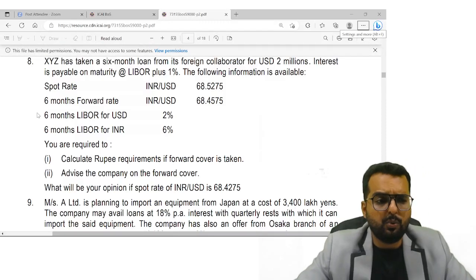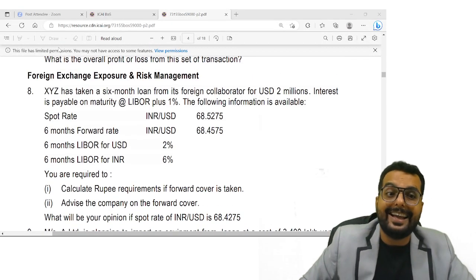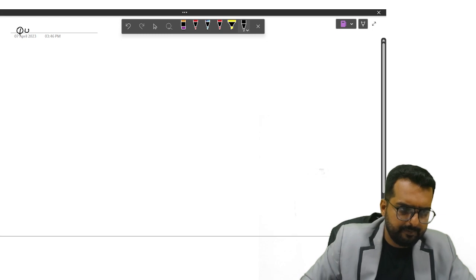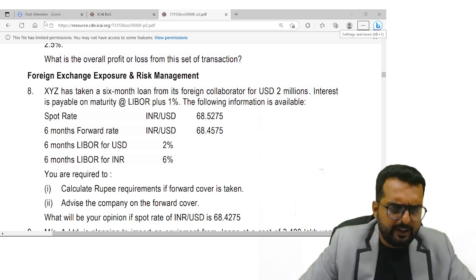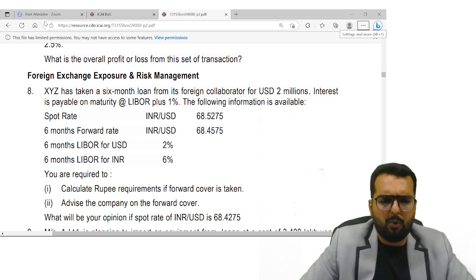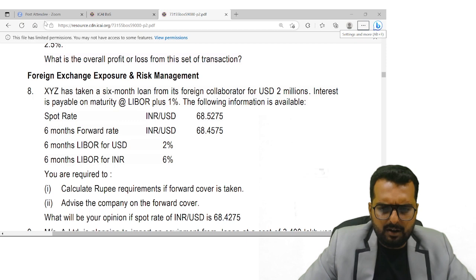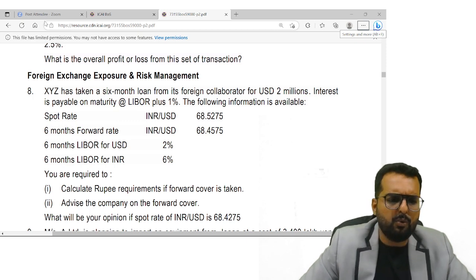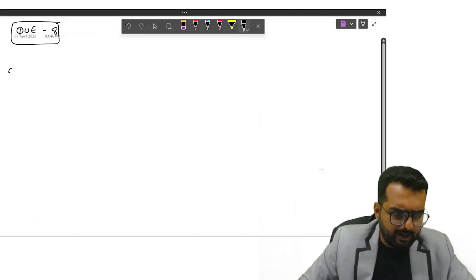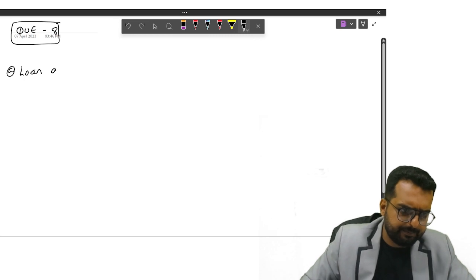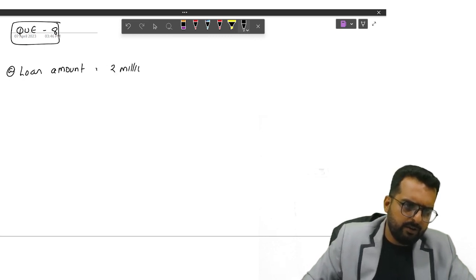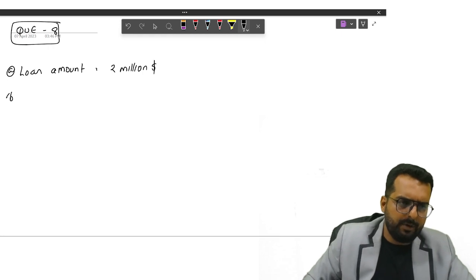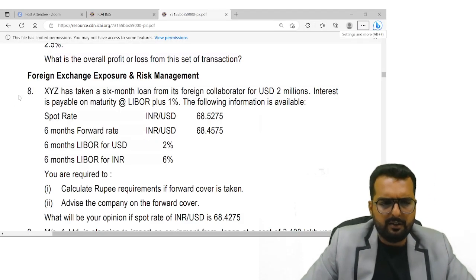Now let us do question number eight. Let's read through the question. XYZ has taken a six months loan from its collaborator for USD 2 million. So I'll write down point number eight. Loan amount is $2 million. All right.